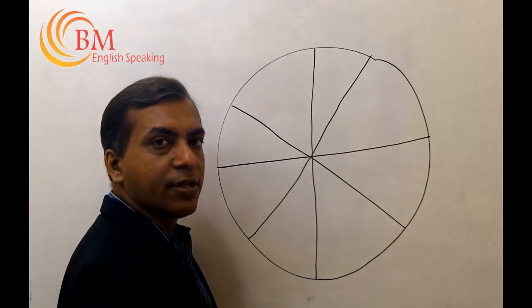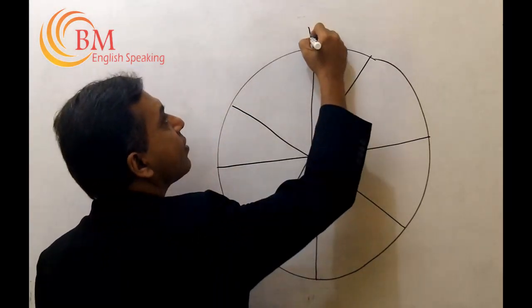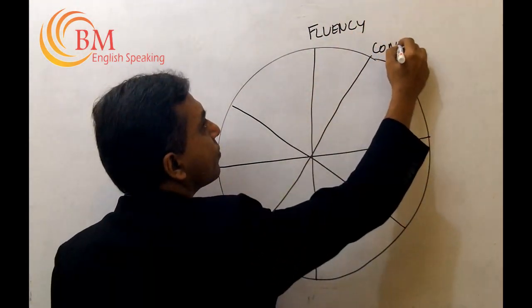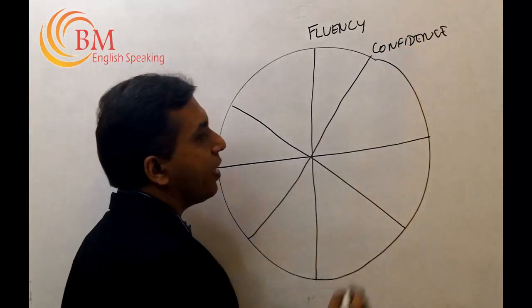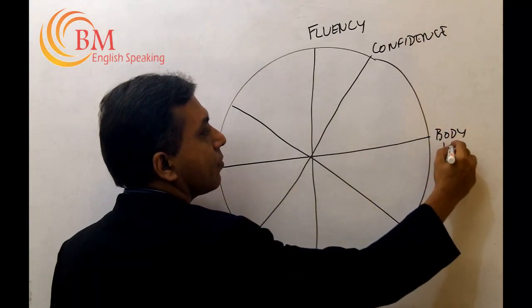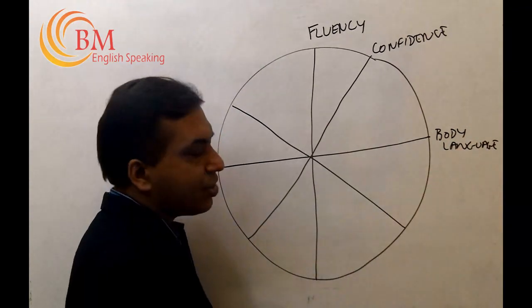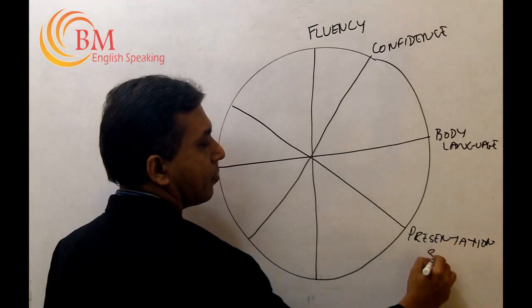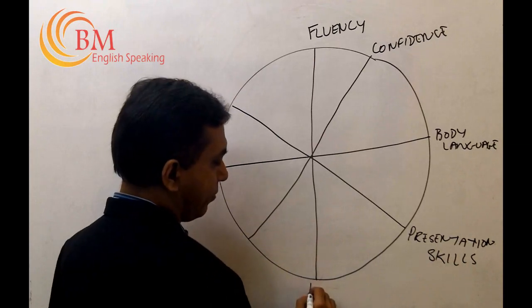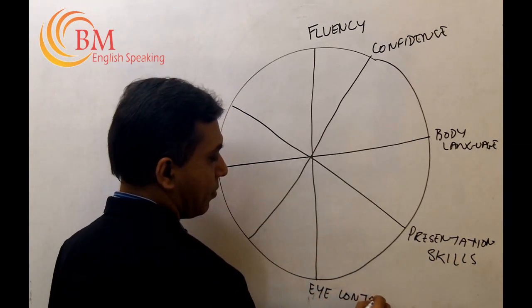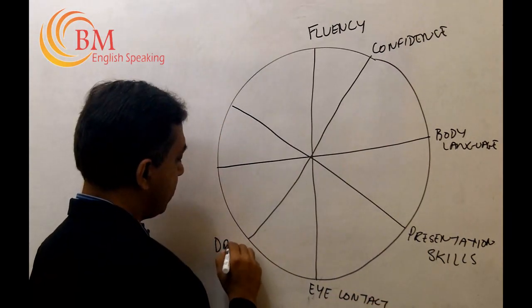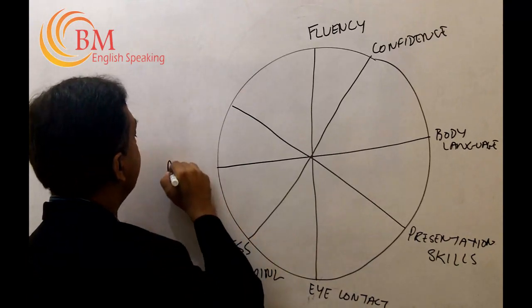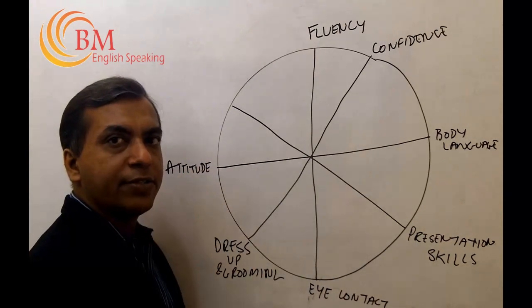Once you've divided the circle into eight parts, now name each point separately: fluency, confidence, body language, presentation skills, eye contact, dressing and grooming, attitude, and voice tone.